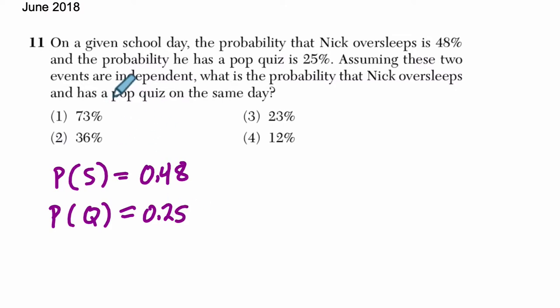Assuming they're independent — so that means they don't impact each other. If one happens, the other doesn't change. So if he oversleeps, it has no impact on whether or not the pop quiz will happen. It'll happen regardless of whether he oversleeps or not.